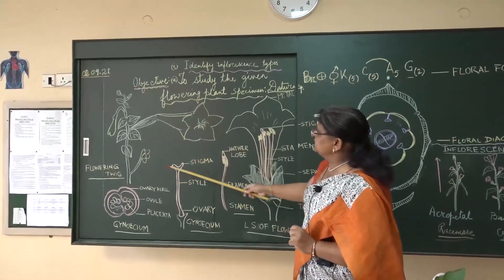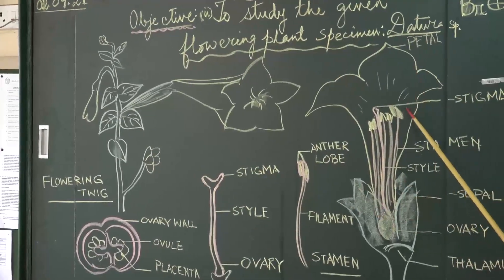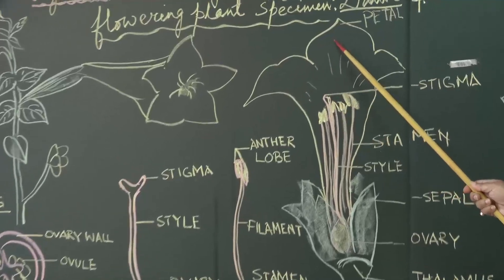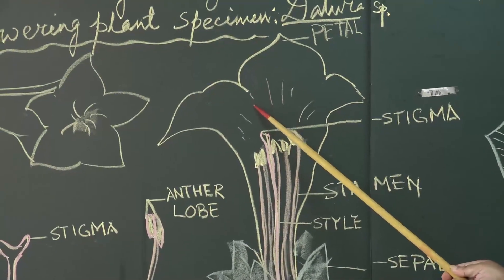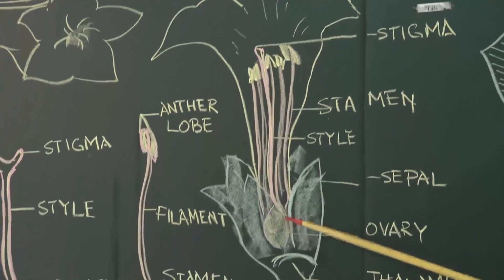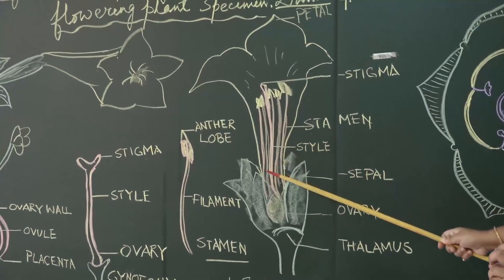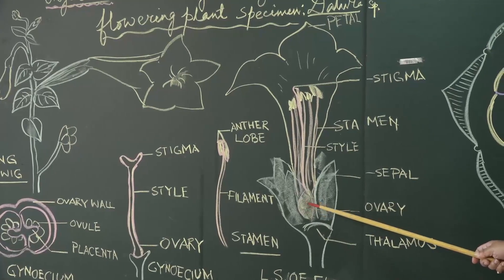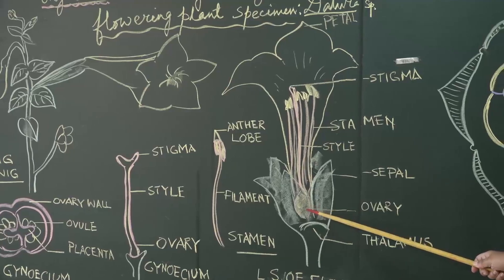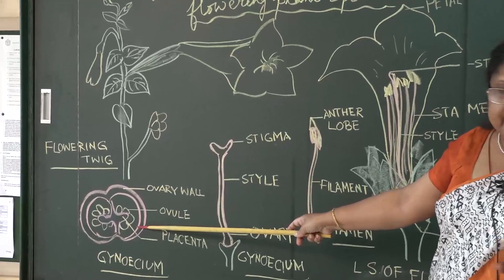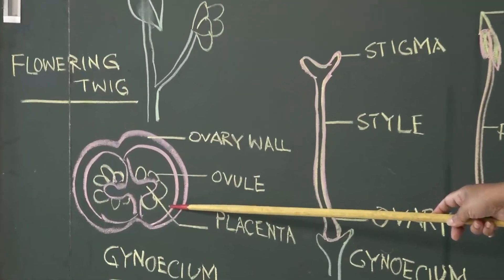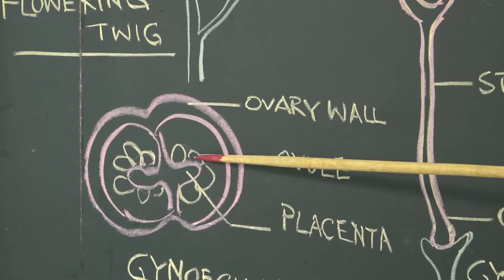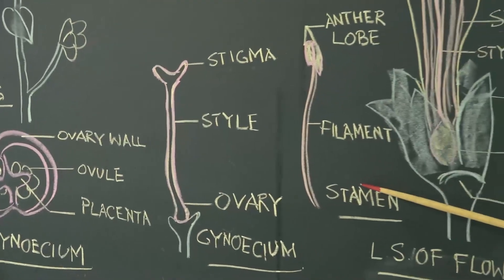Over to the board now — this is the floral twig we were dealing with. The LS of the flower revealed the calyx having 5 sepals, then 5 petals which are also fused with acuminate tips. There are 5 anthers that are epipetalous in nature, and there is a stigma with a long style and a swollen ovary. If we create a transverse section (TS) of the ovary, visible under a simple dissecting microscope, we find the placenta is in the center with ovules arranged around it — giving it axile placentation.